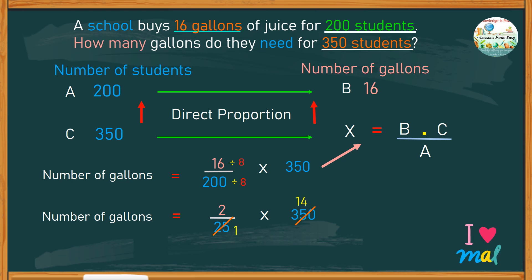we might as well reduce 350 by dividing by 25, where we get 14 and 1. So basically, what we have left is 2 and 14, which gives us a product of 28. So to answer the question as to how many gallons do they need for 350 students, the answer is 28 gallons.